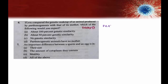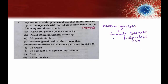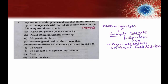Parthenogenesis is a process in which the female gamete develops into a new organism without fertilization. Fertilization is completely absent. When the female gamete develops into a new organism without fertilization, it is called parthenogenesis.